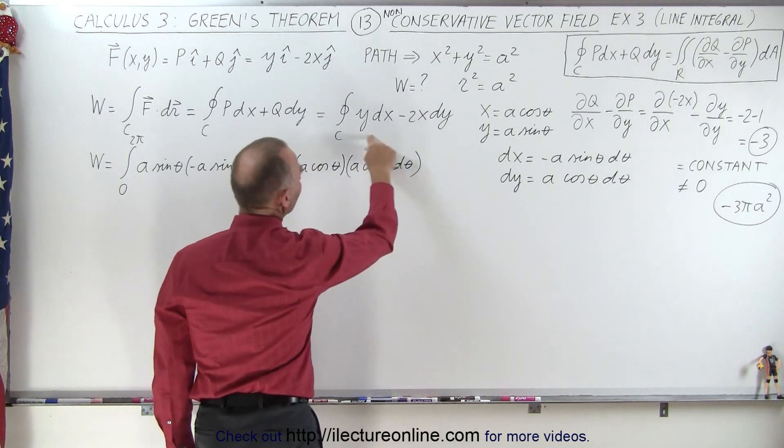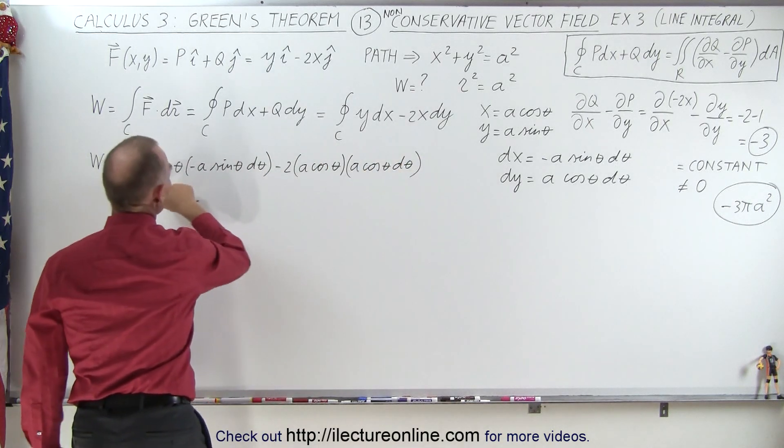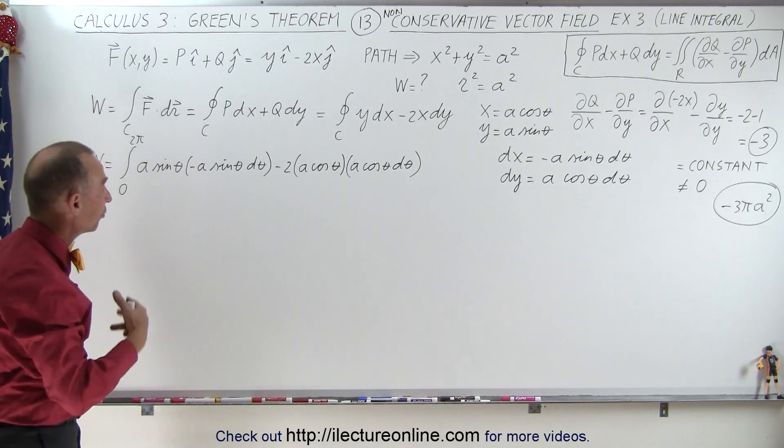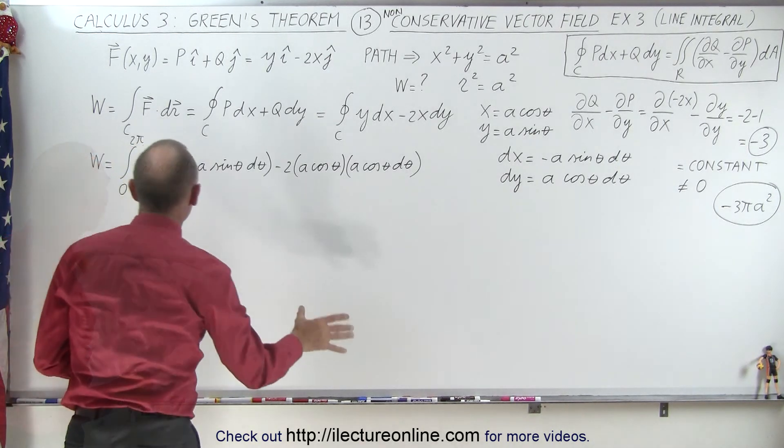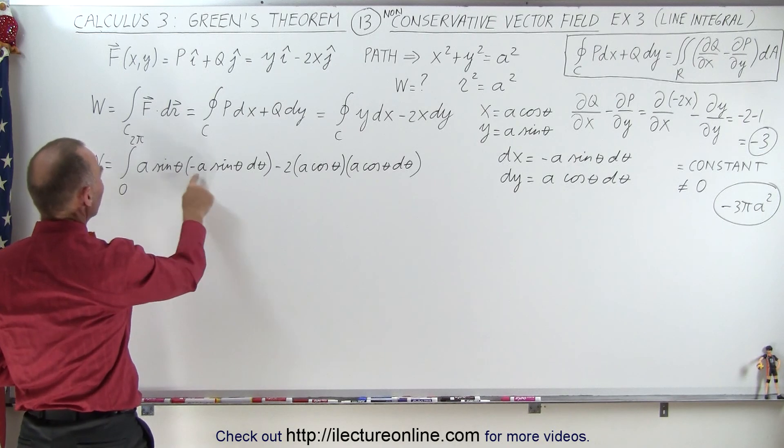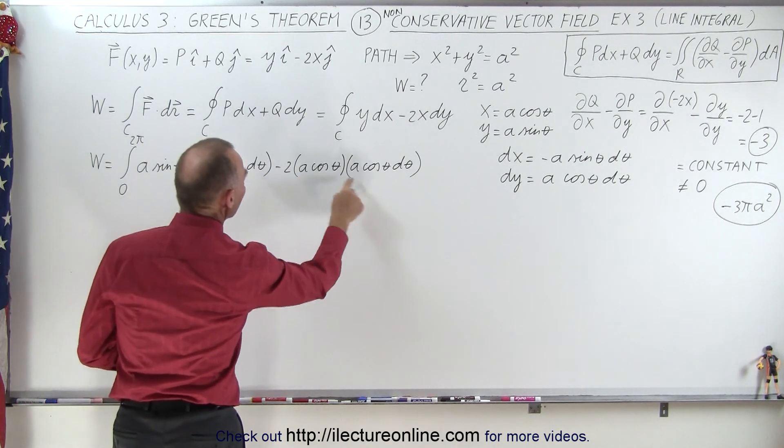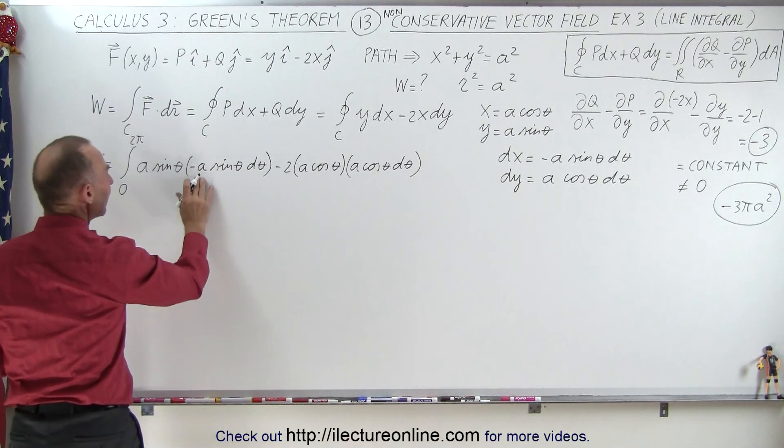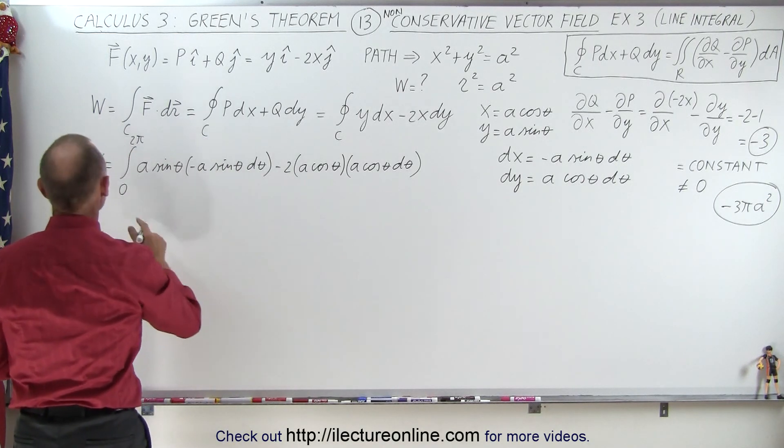So now we have this written in polar coordinates and notice there's only one variable left in there which is the variable theta. So notice that we can factor out an a square here, an a square there and let's see here what that looks like and a negative as well. So let's put out a negative a square.